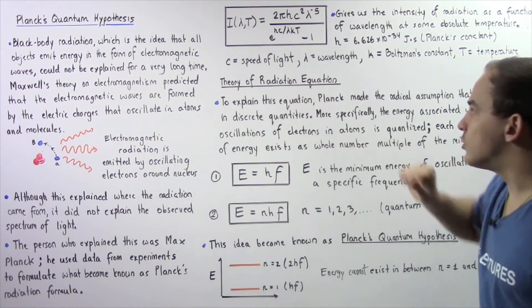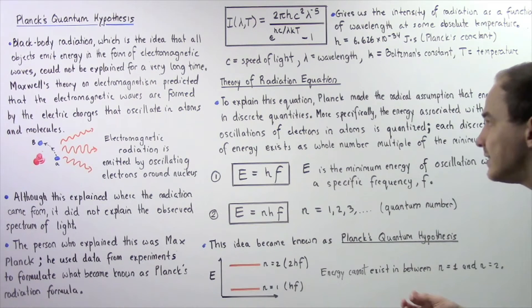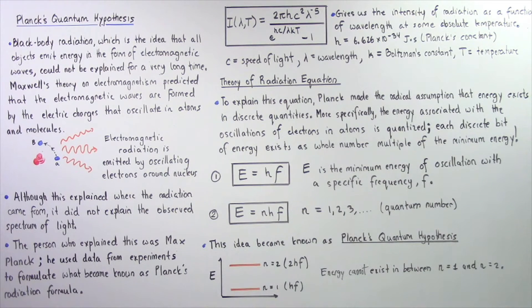So once again, to explain this equation, Planck made the radical assumption that energy exists in discrete quantities. More specifically, he said that energy associated with the oscillations of electrons around the atoms is quantized.